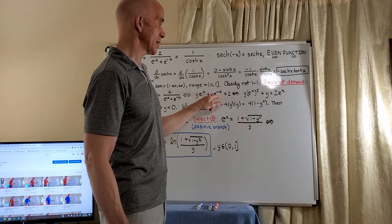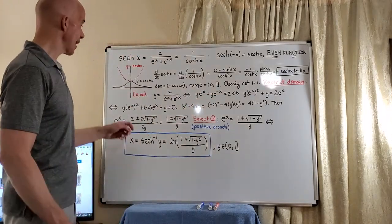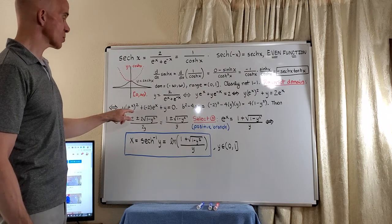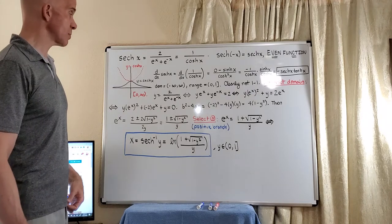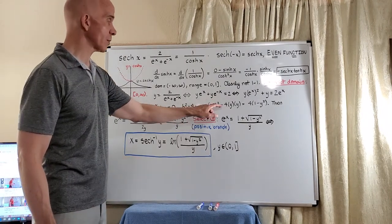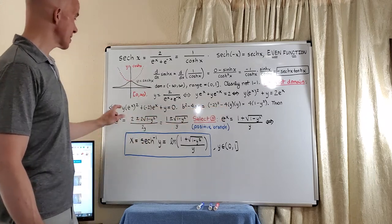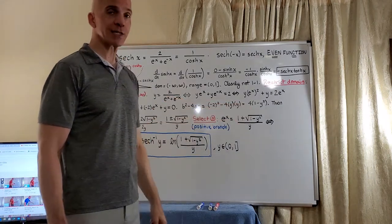Of course, the e to the x multiplied here just gives us the 1 times y. And now put everything on one side, we get y times e to the x squared plus a negative 2 times e to the x plus y equals 0. So we can compute the discriminant. So we'll have negative 2 squared minus 4 times a c y times y, which will give us 4 times 1 minus y squared.